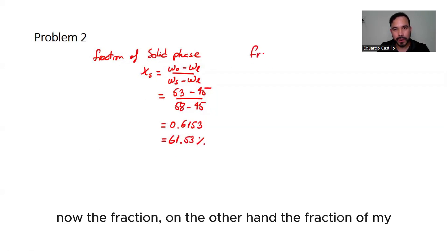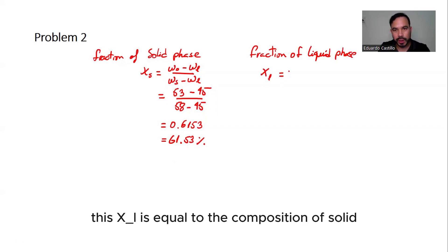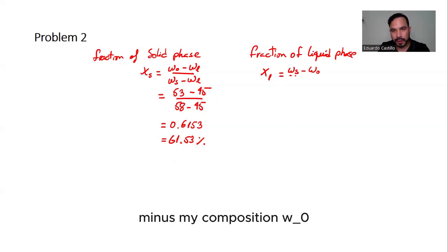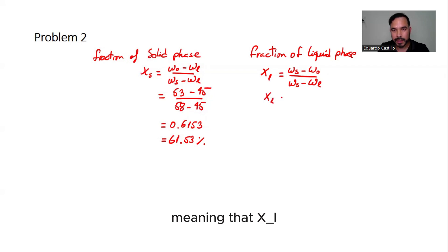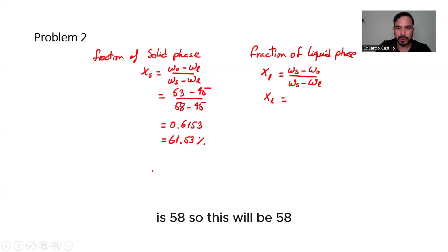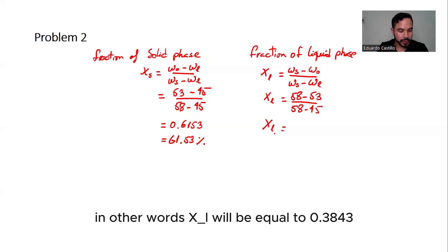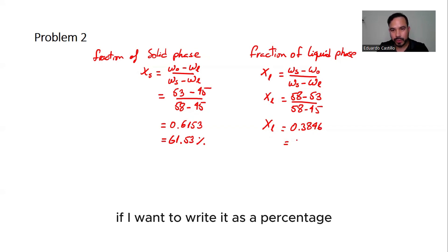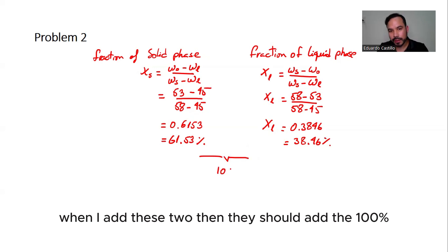The fraction of the liquid phase is: X_L = (W_S − W₀) / (W_S − W_L) = (58 − 53) / (58 − 45) = 5/13 ≈ 0.3846, or about 38.46%. When added together, the solid and liquid fractions sum to 100%.